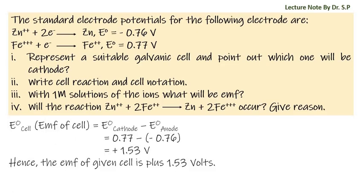We know that standard electrode potential of cell, E°cell, is equal to the potential of cathode minus potential of anode. So E° = 0.77 - (-0.76) = +1.53 V. Hence, the emf of given cell is plus 1.53 volts.